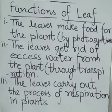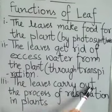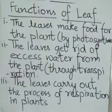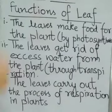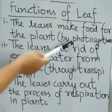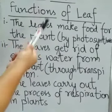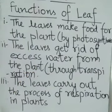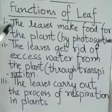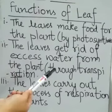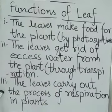The third function is that leaves carry out the process of respiration in plants. Respiration is a process which takes place during both the day and the night time. But photosynthesis is a process which takes place during the day time only, because of the presence of sunlight. So these are the three functions of the leaf: first, it helps in photosynthesis; second, it loses excess water through transpiration; and thirdly, leaves carry out the process of respiration.